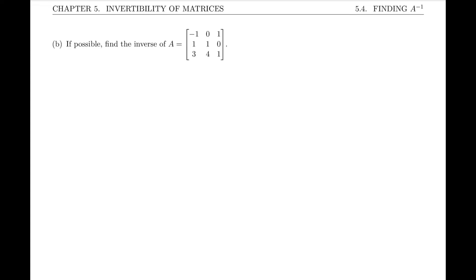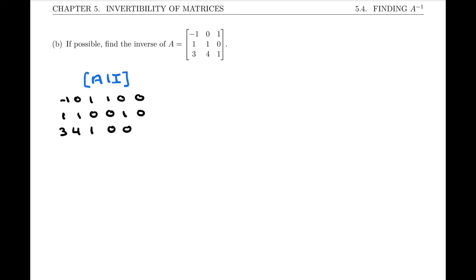Welcome to the second part of example 5.4.1, part B. We're asked once again to find, if possible, the inverse of the given matrix. Just like before, we use the method of writing the augmented matrix [A|I] — the given matrix augmented by the identity matrix — and then we proceed to put it into RREF using the Gauss-Jordan algorithm.